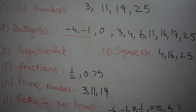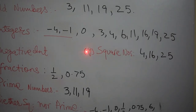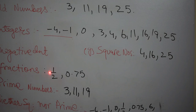Then students come the square numbers. You can see here the square numbers is part G. This is part G and the square numbers from the above given numbers are 4, 16 and 25. Fractions are 1 by 2 and 0.75 only. Prime numbers from the given example are 3, 11 and 19.